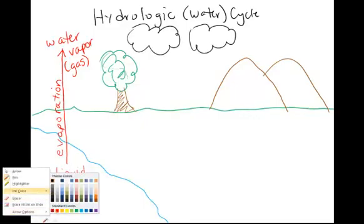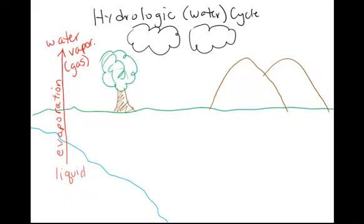That process of going from gas, water vapor, back into liquid water to become a cloud is called condensation. So we're going to put condensation here, going from gas back to liquid.